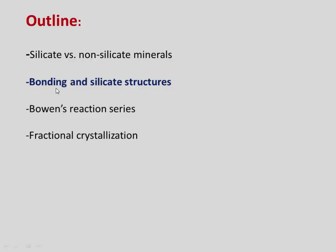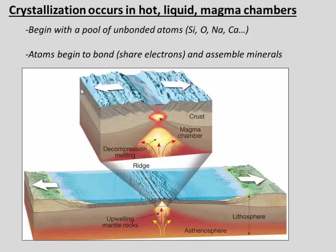From here on out, we're only going to focus on silicate minerals. The story of silicate minerals really begins in a magma chamber — a hot liquid magma chamber that essentially consists of a pool of unbonded atoms: things like silica, oxygen, and sodium, essentially floating around looking to bond. As the magma begins to cool, the thermal energy subsides enough that bonds can begin to form between the atoms. They can start to share electrons and assemble minerals by bonding specific atoms.